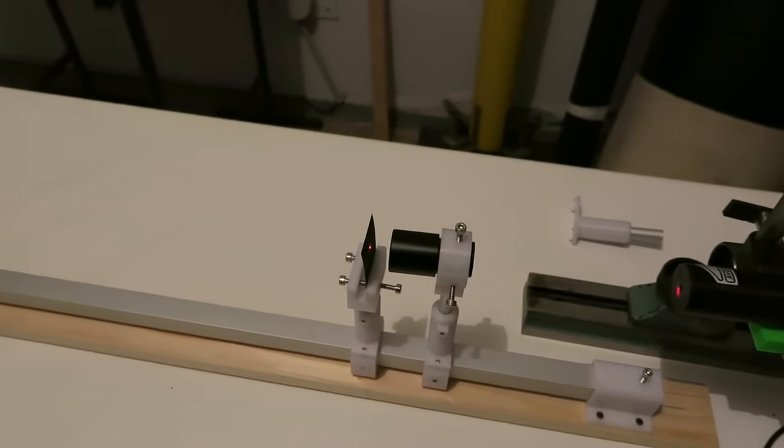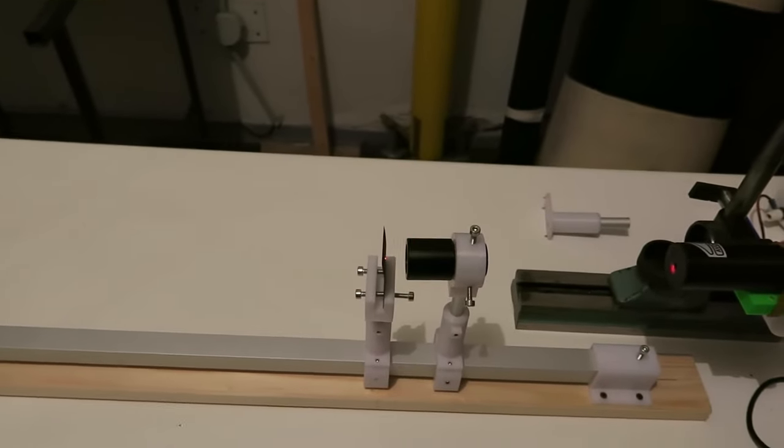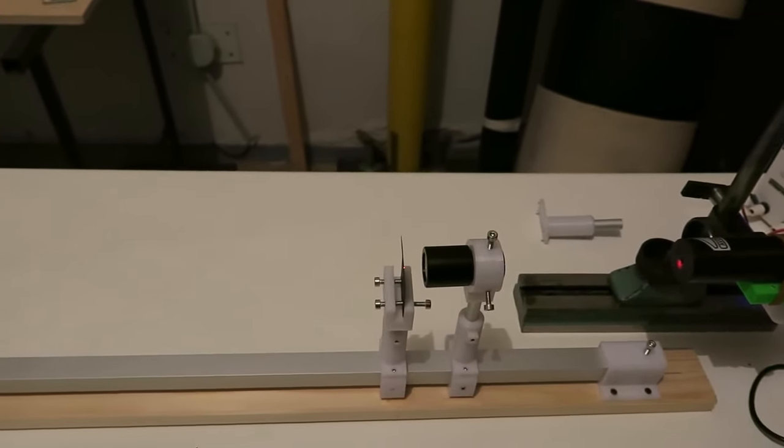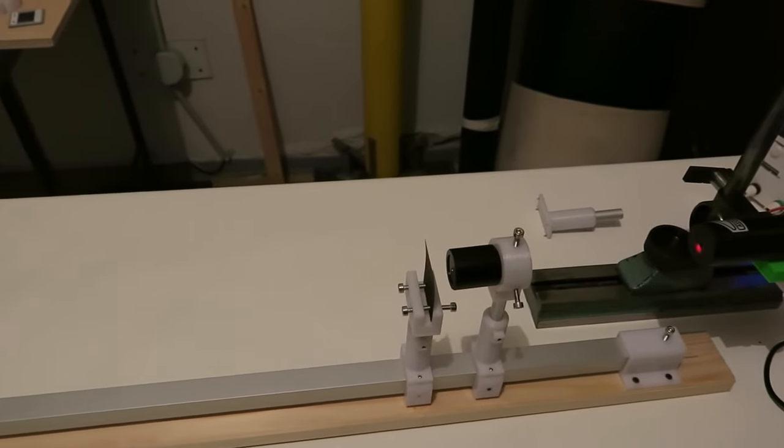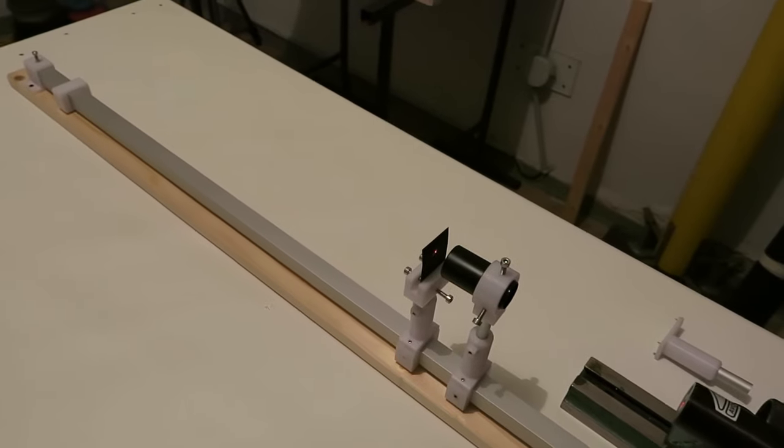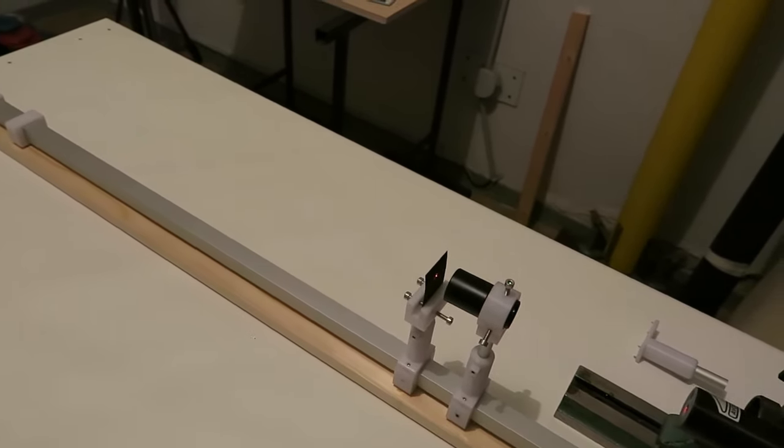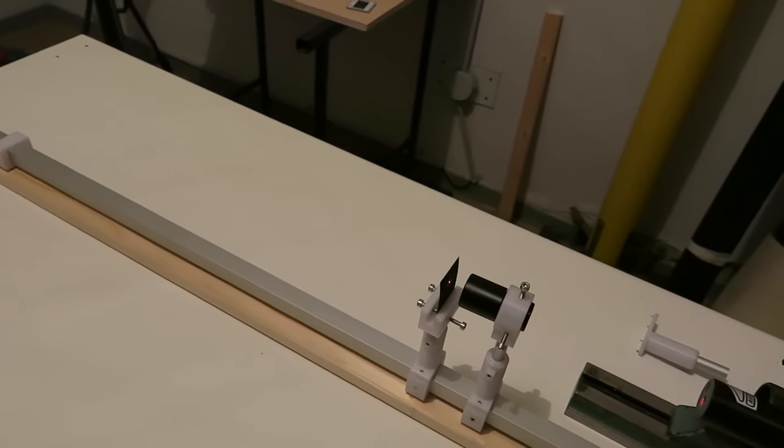This pinhole is placed in the Fourier plane, which is a virtual plane that is at the focal distance from our converging lens. In this plane we have the spatial Fourier transform of our laser beam, and this is made thanks to our converging lens.